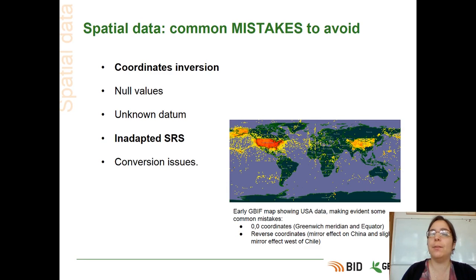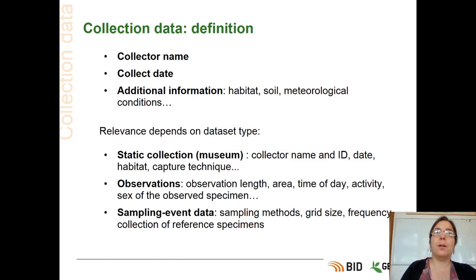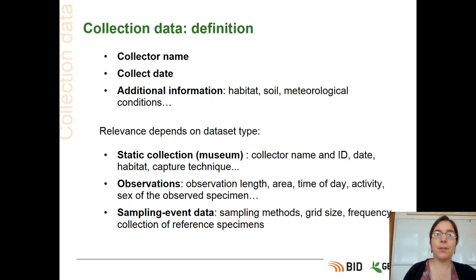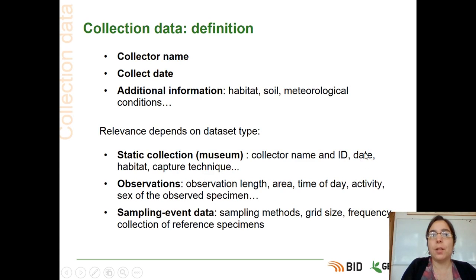Now we are talking about collection data. When we talk about collection data, we talk about the collector names, the collection dates, and some additional information such as habitat, soil, or meteorological conditions. The relevance of this data depends on the dataset type. If you have a static collection such as a museum collection, you will need the collector name and their ID, the date of collection, and maybe the habitat or the capture technique if you have it.